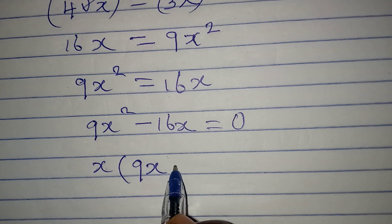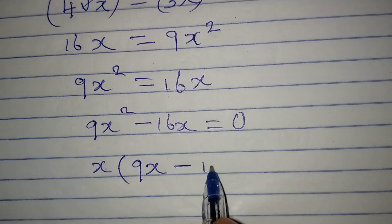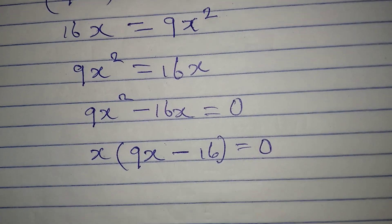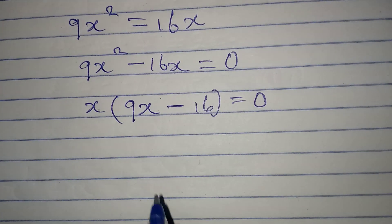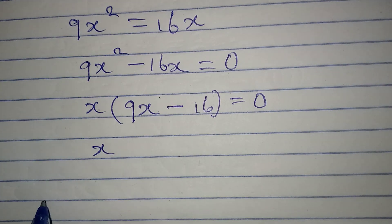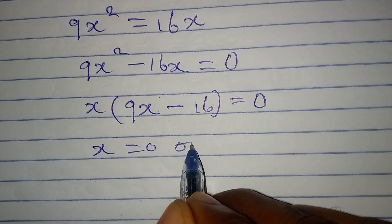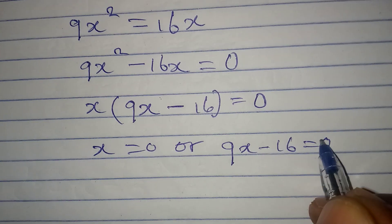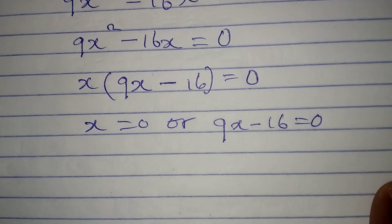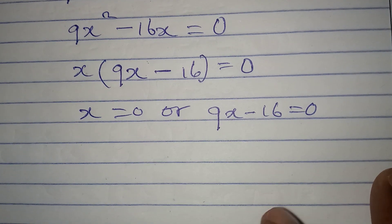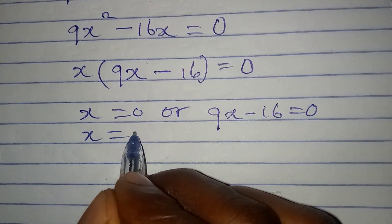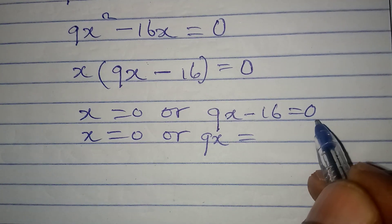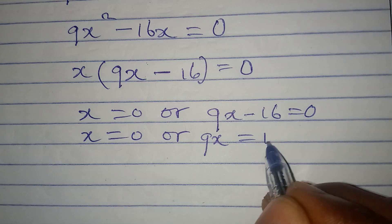What is common to these two terms is X, so we factorize to get X times (9X minus 16) equal to 0. Applying the zero product rule, it's either X equals 0 or 9X minus 16 equals 0.